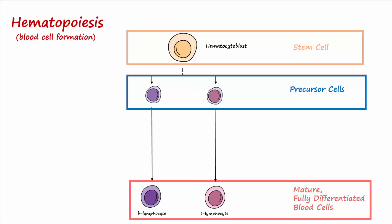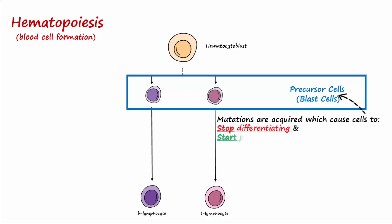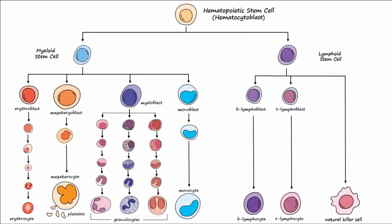These precursor cells eventually differentiate into mature blood cells. In the case of acute leukemia, it is the early precursor cells — also known as blast cells — that acquire genetic mutations which cause the cells to stop differentiating and start proliferating. Looking at this hematopoietic chart, notice the blast cells: AML is where blast cells of the myeloid lineage are proliferating.